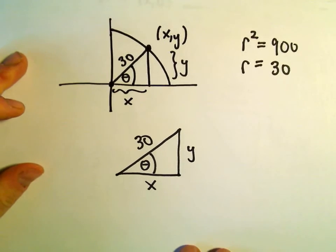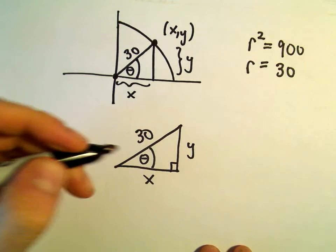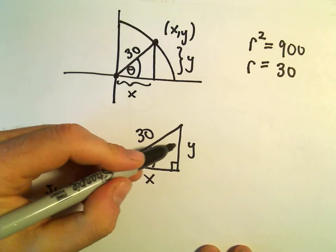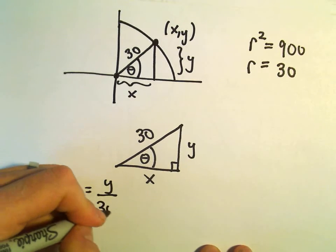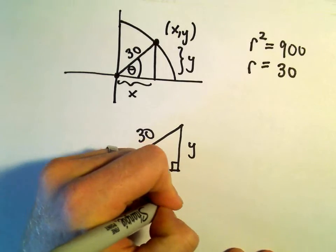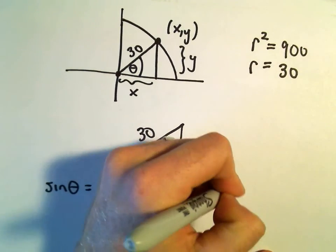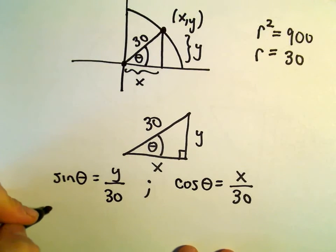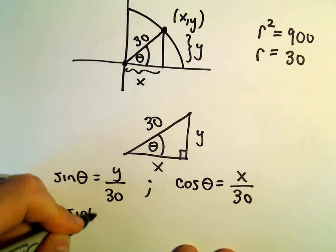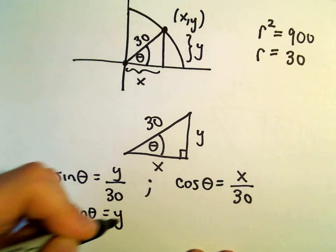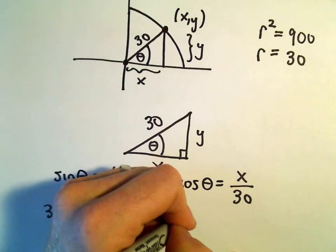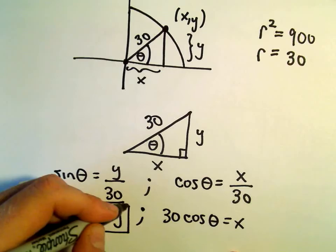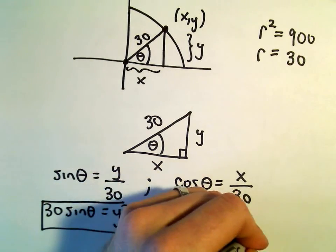Well, now we can just use our right triangle relationships. Recall that sine of the angle theta, sine will be the opposite over the hypotenuse. Cosine of theta is going to be the adjacent over the hypotenuse. So, we can simply multiply, in both cases, by 30. So, we'll get 30 sine theta equals y. Also, we'll get the 30 times cosine of theta equals x. And now we have an expression for x and y, in terms of theta.